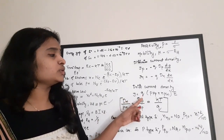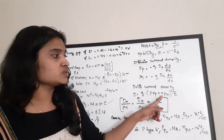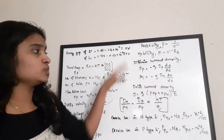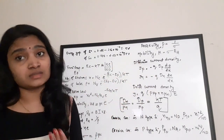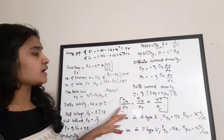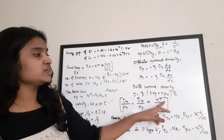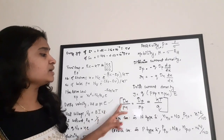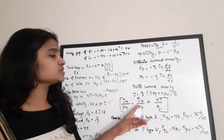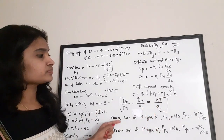The drift current density J = q × (p × μp + n × μn) × E, where p is number of holes, μp is hole mobility, n is number of electrons, μn is electron mobility, and E is the electric field. The Einstein relation between diffusion coefficients and mobility: Dn / μn = Dp / μp = kT / q.